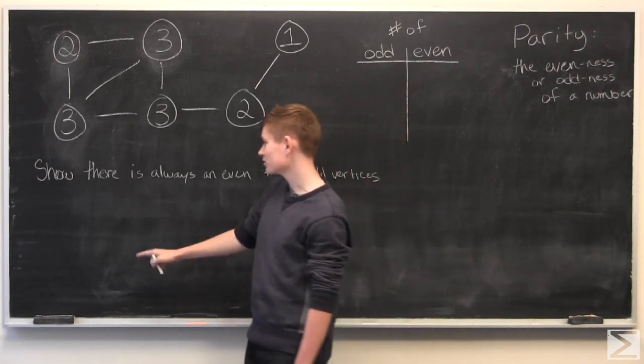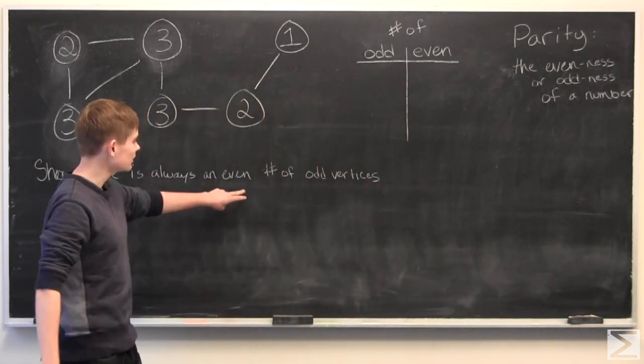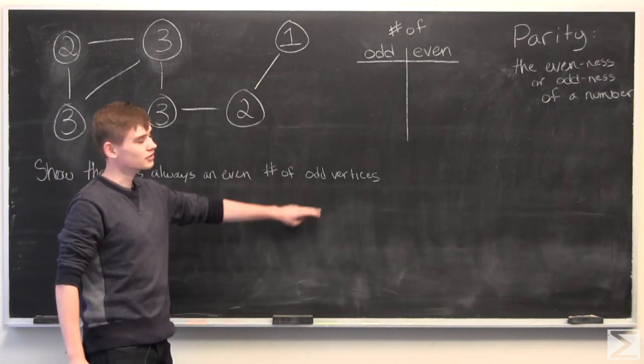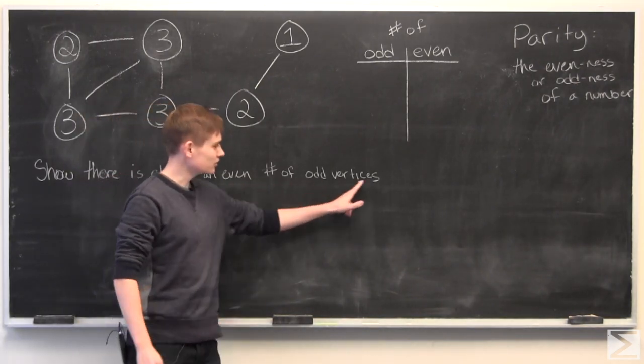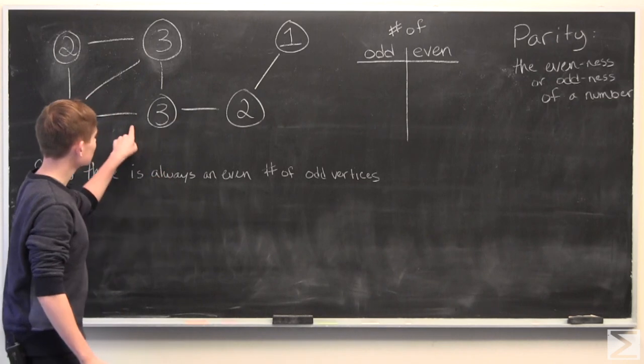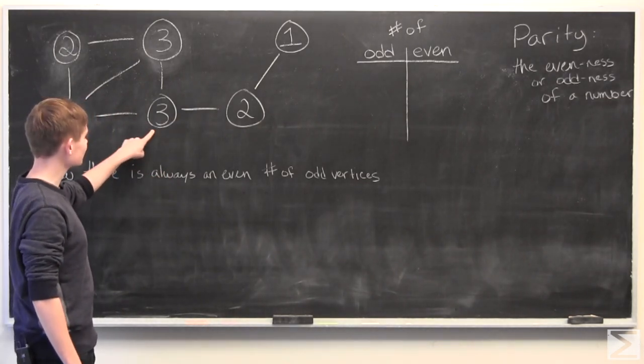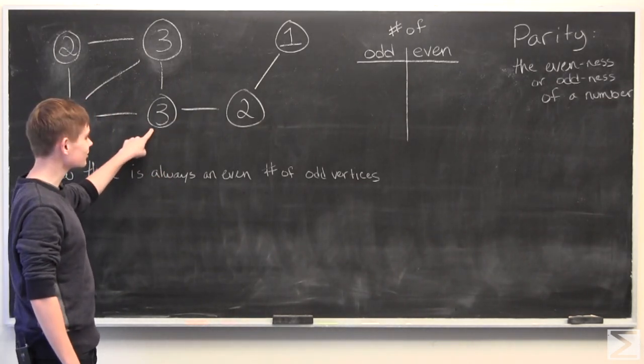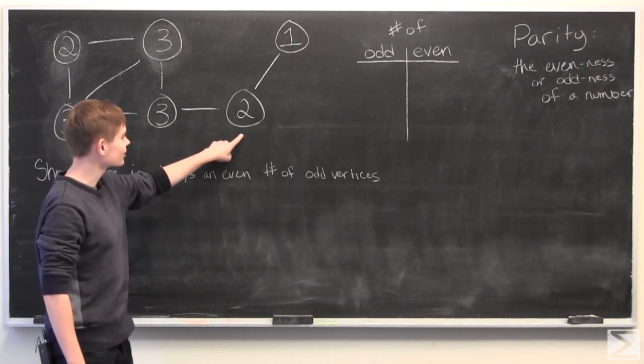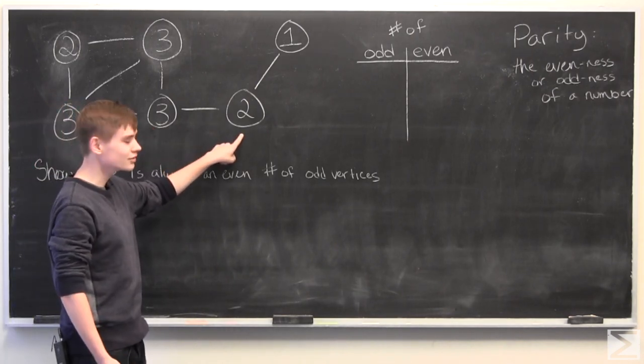And the actual problem was to show there is always an even number of odd vertices. And what odd vertices means is the number of edges that connect to the vertices. So in this case there's three, so this is an odd vertex. In this case there's two, so this is an even vertex.